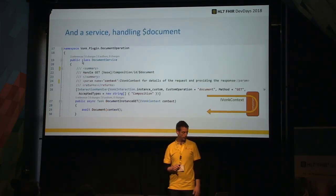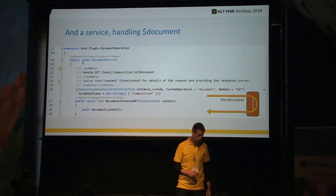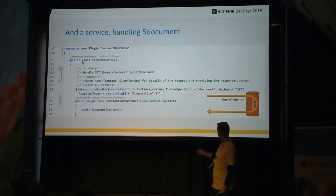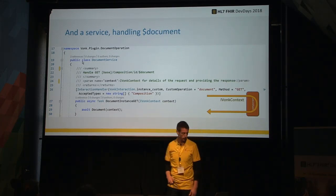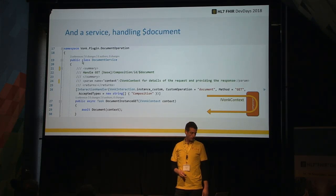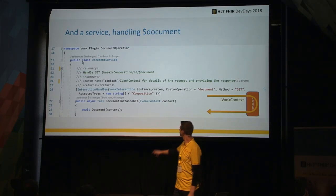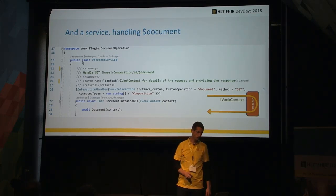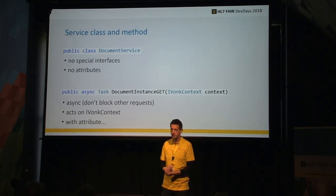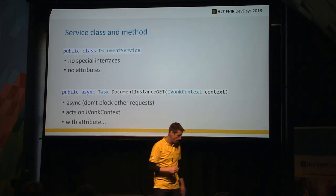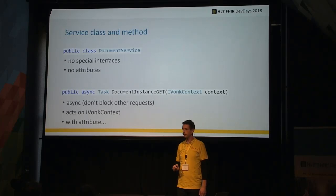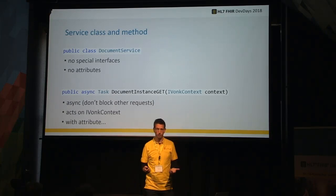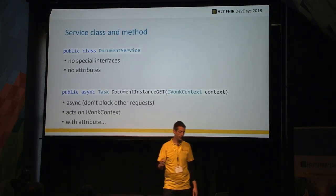Now we have a project that needs to do something, so we add a service that's capable of handling documents — a component that handles the VONC context, not the HTTP context. It has a method called 'act on' — we want to do a GET of the composition, read it, and create the document from it. The surface class is nothing special, just a class. The method handles a VONC context, which is the counterpart to the HTTP context but with FHIR information in it. It's important to make it asynchronous — you don't want to block all other requests before you're done handling.